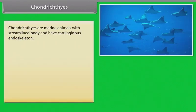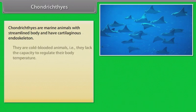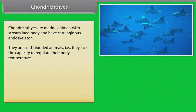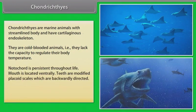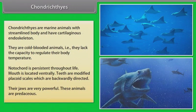Chondrichthyes. Chondrichthyes are marine animals with streamlined body and have cartilaginous endoskeleton. They are cold-blooded animals, that is, they lack the capacity to regulate their body temperature. Notochord is persistent throughout life. Mouth is located ventrally. Teeth are modified placoid scales, which are backwardly directed. Their jaws are very powerful. These animals are predaceous.